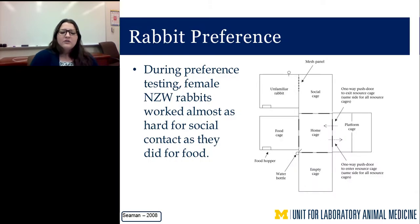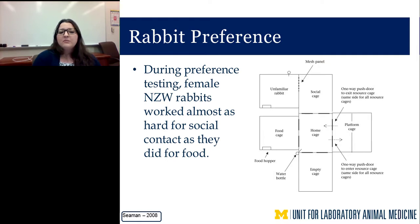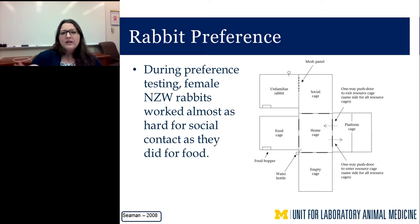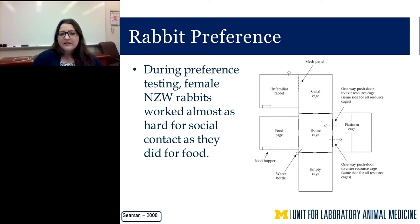In addition to regulatory guidelines, we also socially house based on the rabbit's own preference. A great study provided preference testing to female New Zealand white rabbits, showing they worked almost as hard for social contact as they did for food. Rabbits were placed in a home cage with doors leading to a food cage, an empty cage, an enriched platform cage, or a social cage offering limited interaction with an unfamiliar rabbit through a mesh panel. They worked almost equally as hard for social access as for food.